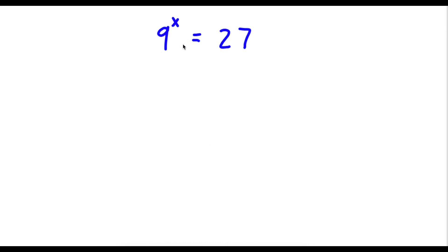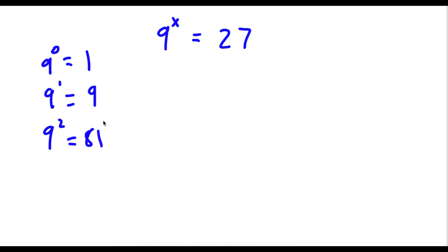So I have 9 to the power of x is equal to 27. This may seem like a challenging problem because if you notice, 9 to the power of 0 is equal to 1, 9 to the power of 1 is equal to 9, and 9 to the power of 2 is equal to 81. Meaning x in this case would be either a fraction or a decimal, because it can't be a whole number. But to solve this, it's actually really simple.